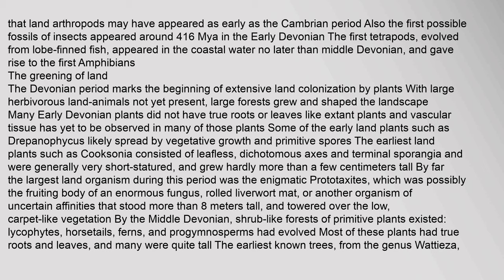The earliest land plants such as Cooksonia consisted of leafless, dichotomous axes and terminal sporangia, and were generally very short-statured, growing hardly more than a few centimeters tall. By far the largest land organism during this period was the enigmatic Prototaxites, which was possibly the fruiting body of an enormous fungus, a rolled liverwort mat, or another organism of uncertain affinities that stood more than eight meters tall and towered over the low carpet-like vegetation. By the middle Devonian, shrub-like forests of primitive plants existed — lycophytes, horsetails, ferns, and progymnosperms had evolved. Most of these plants had true roots and leaves, and many were quite tall.